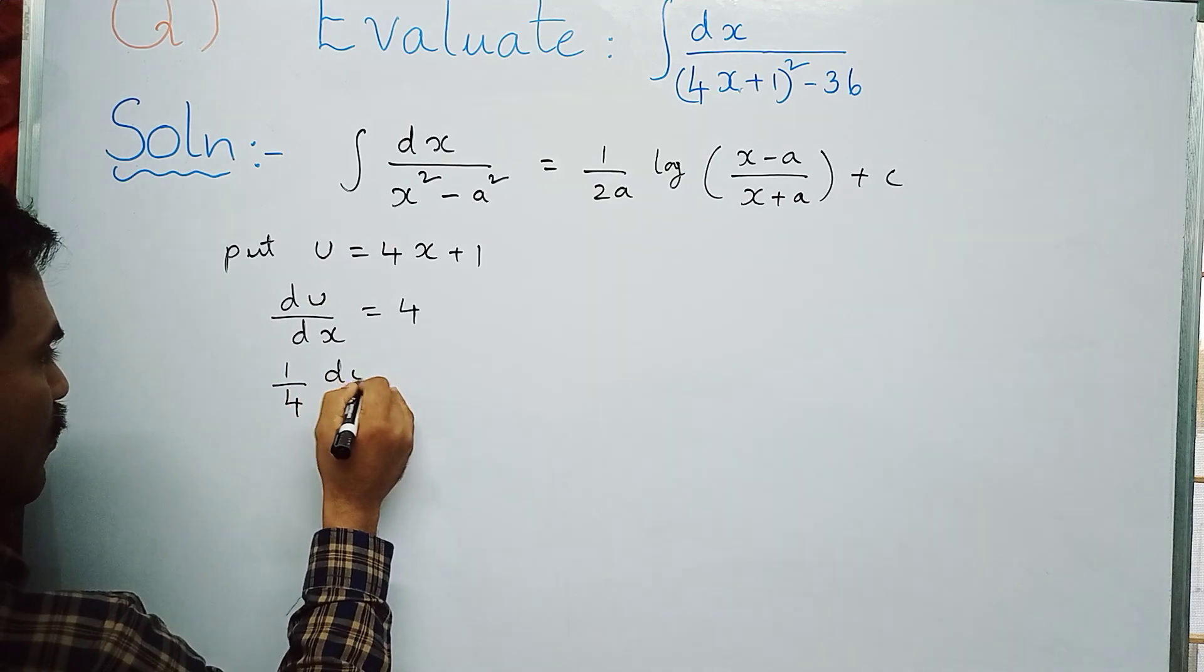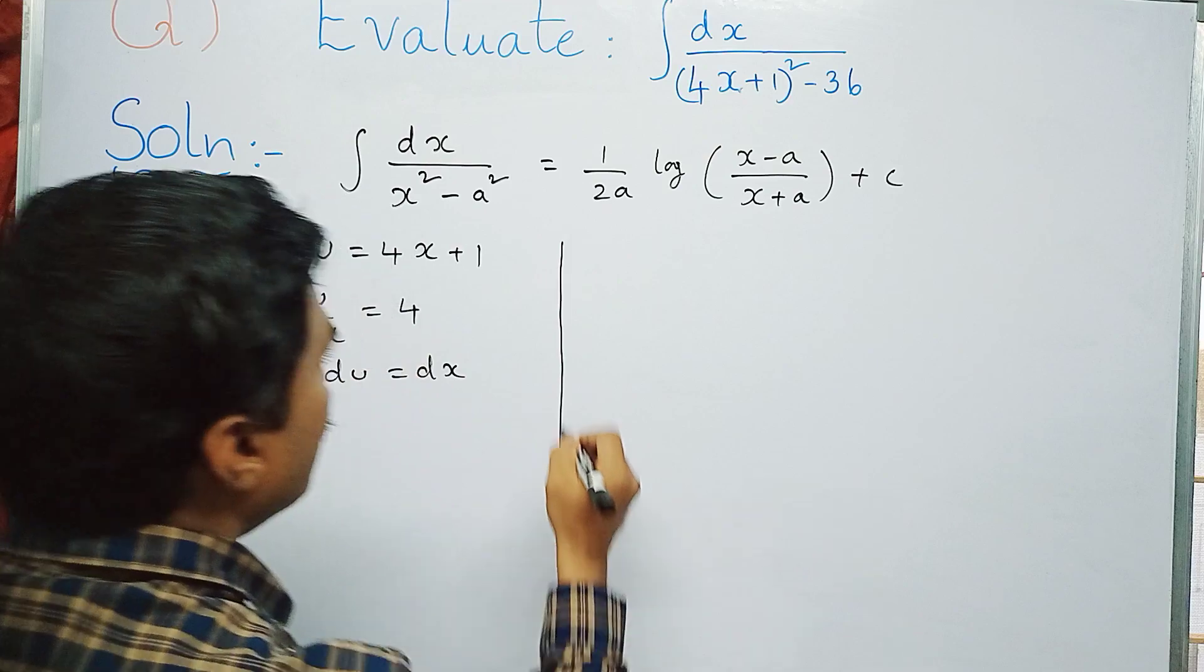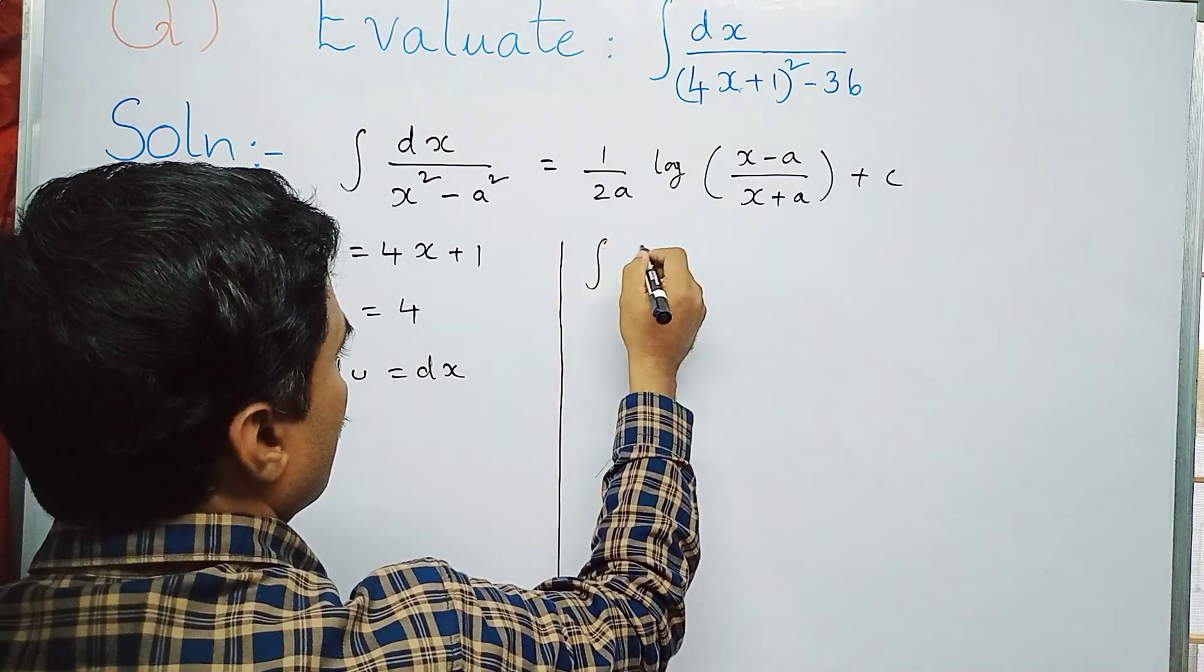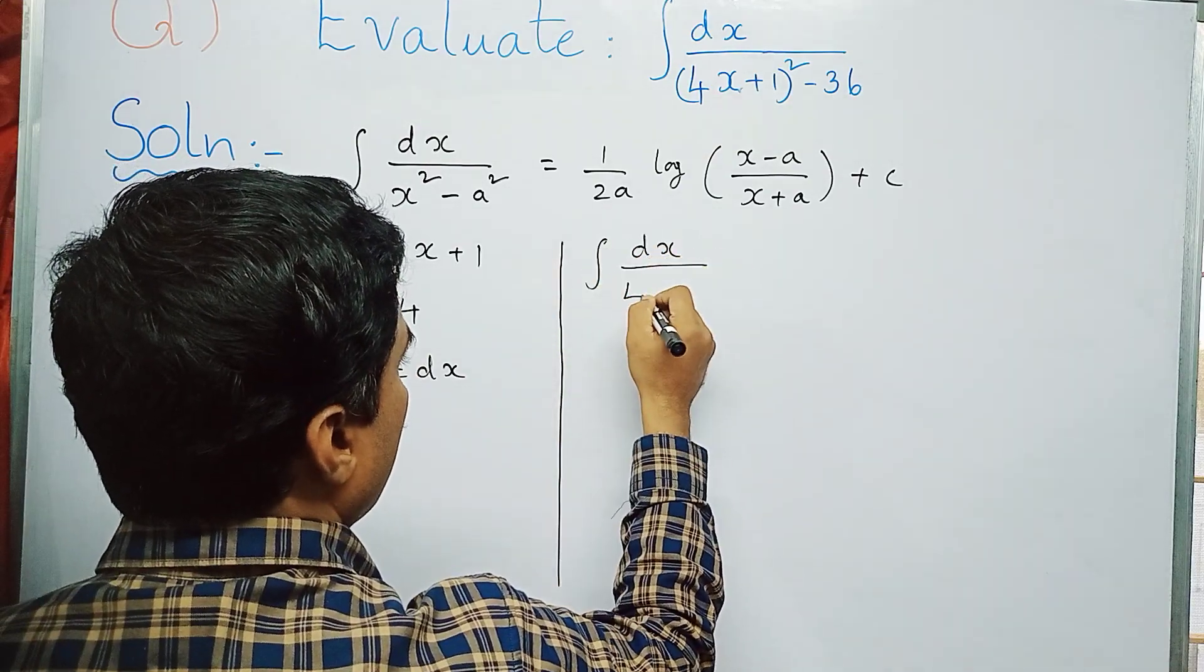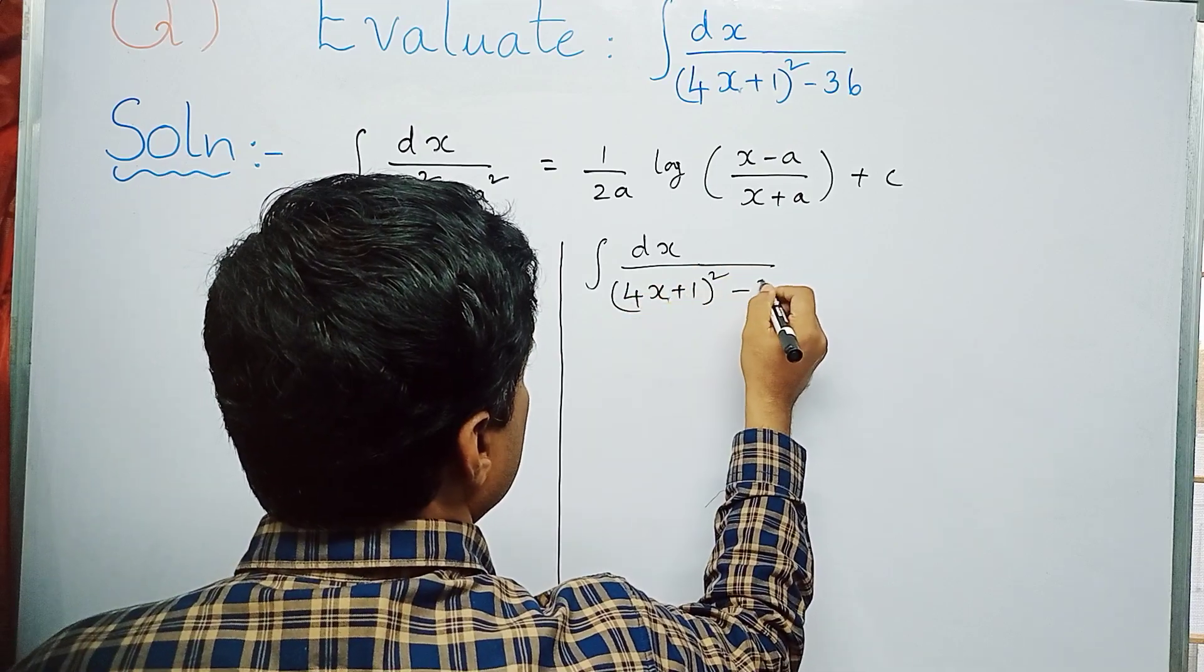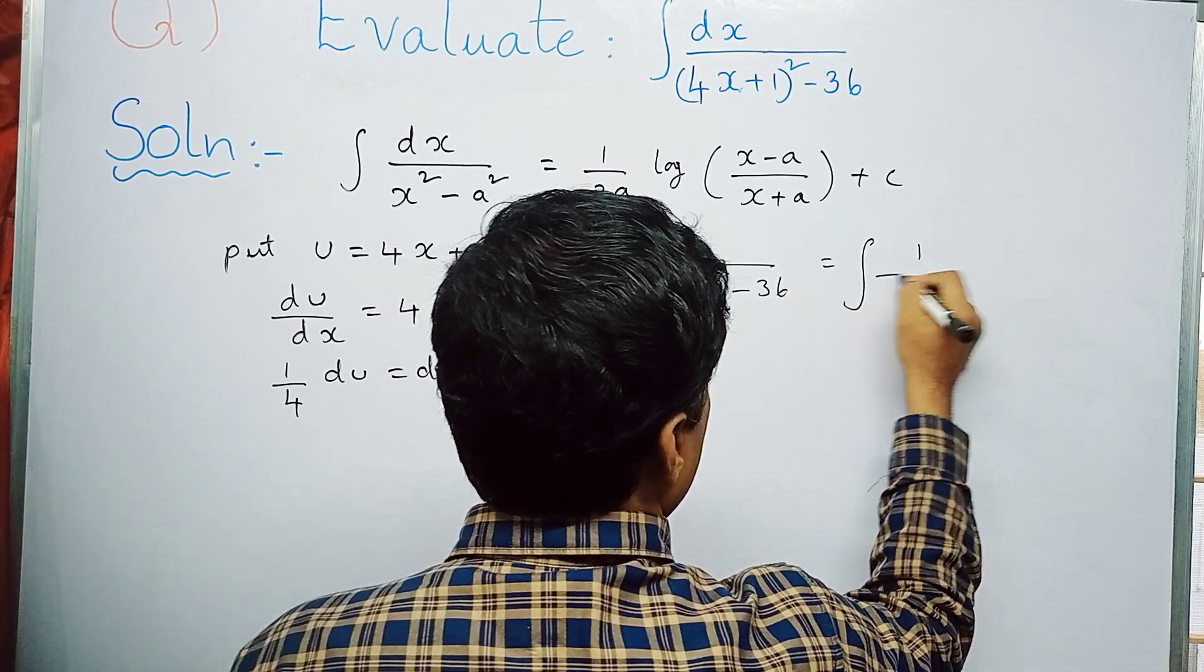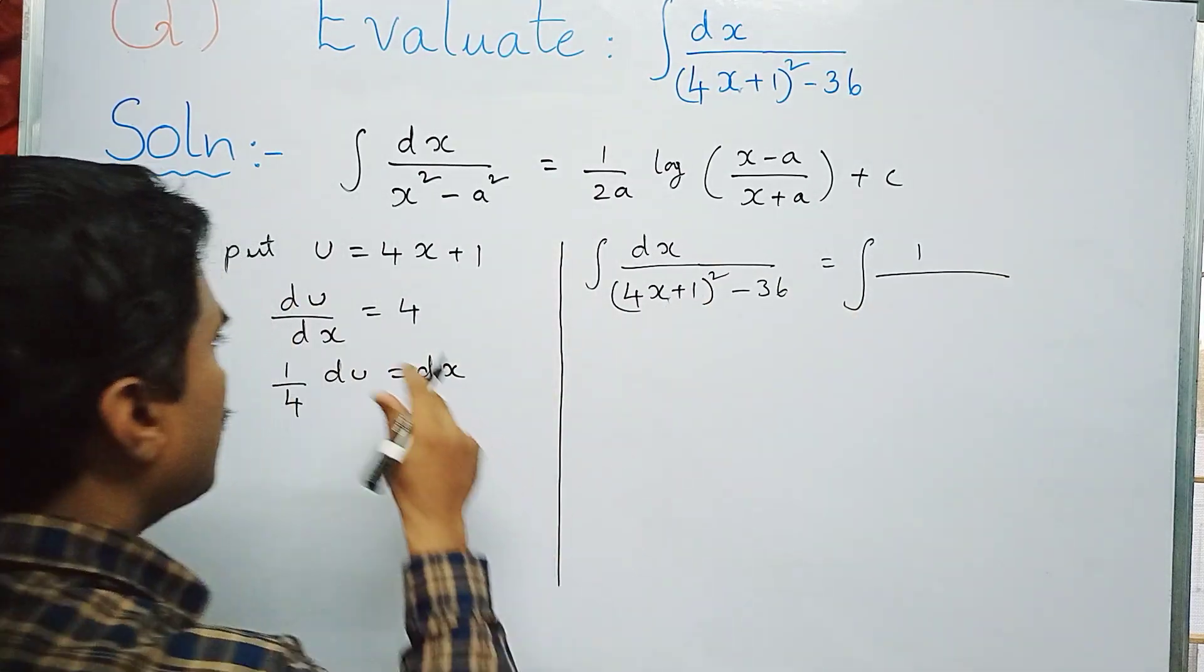Now write the given integral. Integral dx by (4x + 1)² - 36 can be written as integral 1 by...